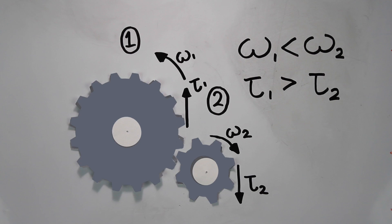So overall, by running two gears together of different sizes, we are able to change the speed of rotation and the torque.